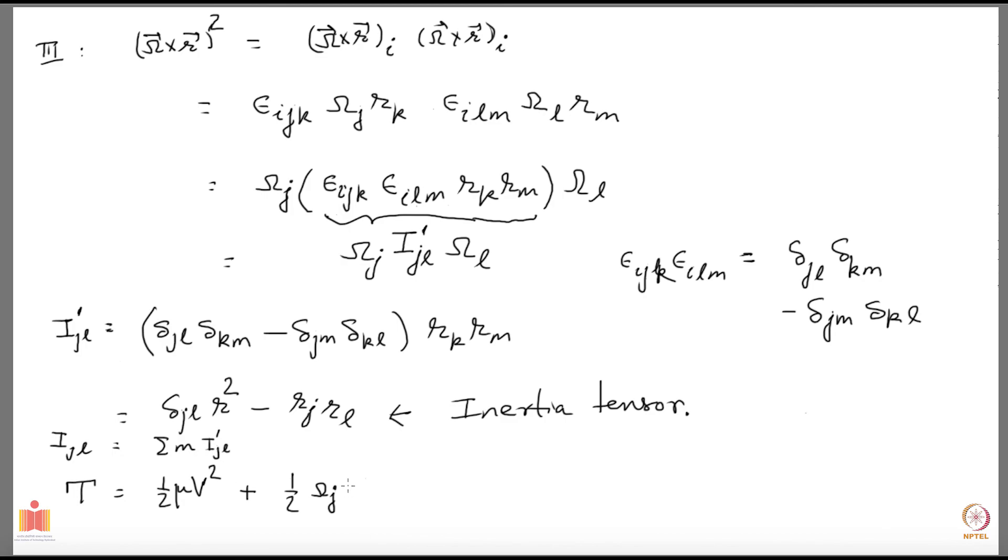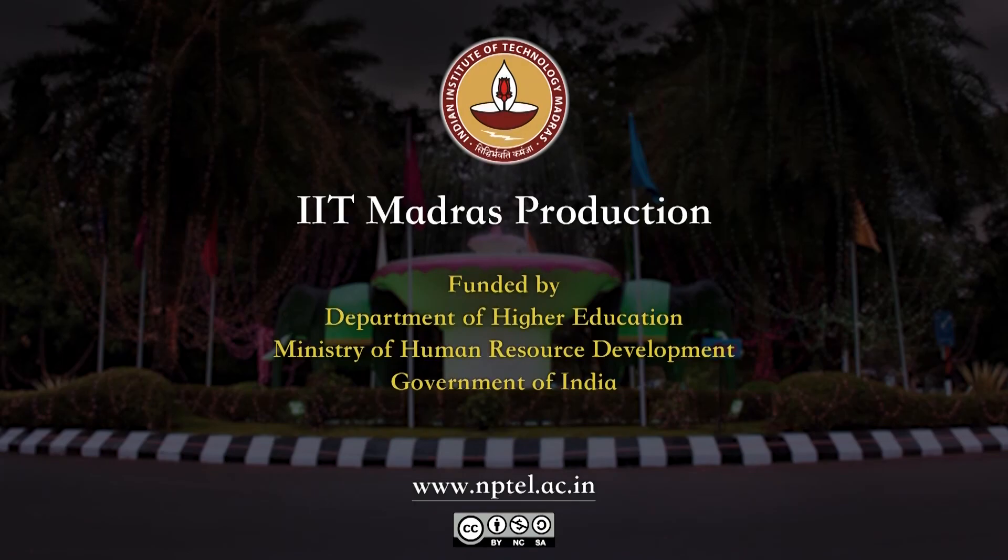The third term is half omega j Ijl omega l. That is your kinetic energy and if you want to construct the Lagrangian, your Lagrangian will be just T minus the potential energy. The potential energy will depend on your location of your center of mass and the orientation of your rigid body which will be given by the Euler angles. We have again seen that inertia tensor appears here as well and we can express nicely our kinetic energy as product of inertia tensor and the angular velocities. We will continue more on rigid bodies in the next video.